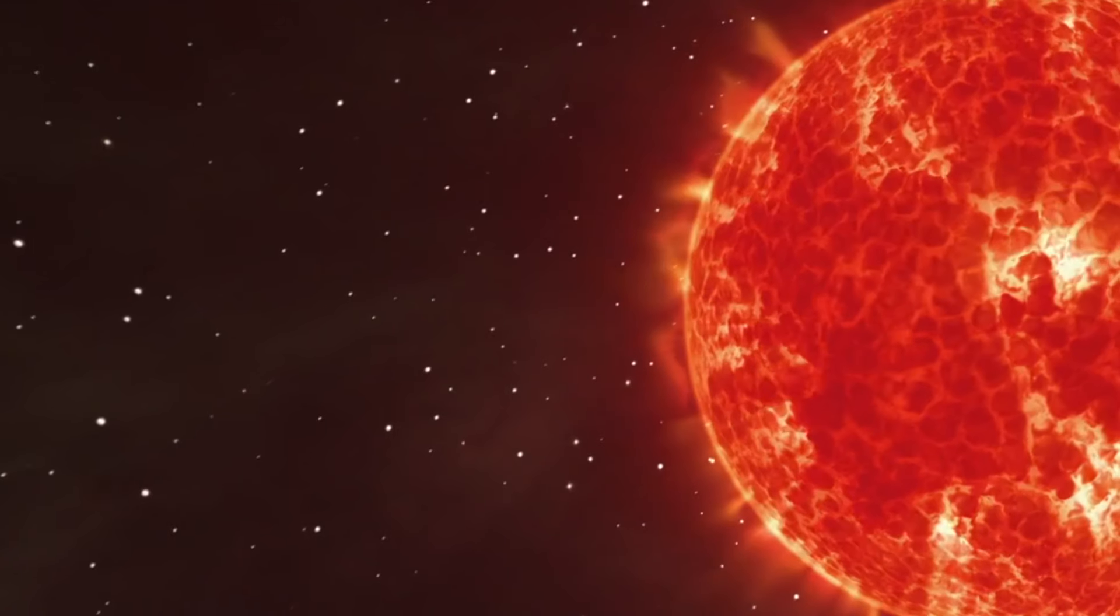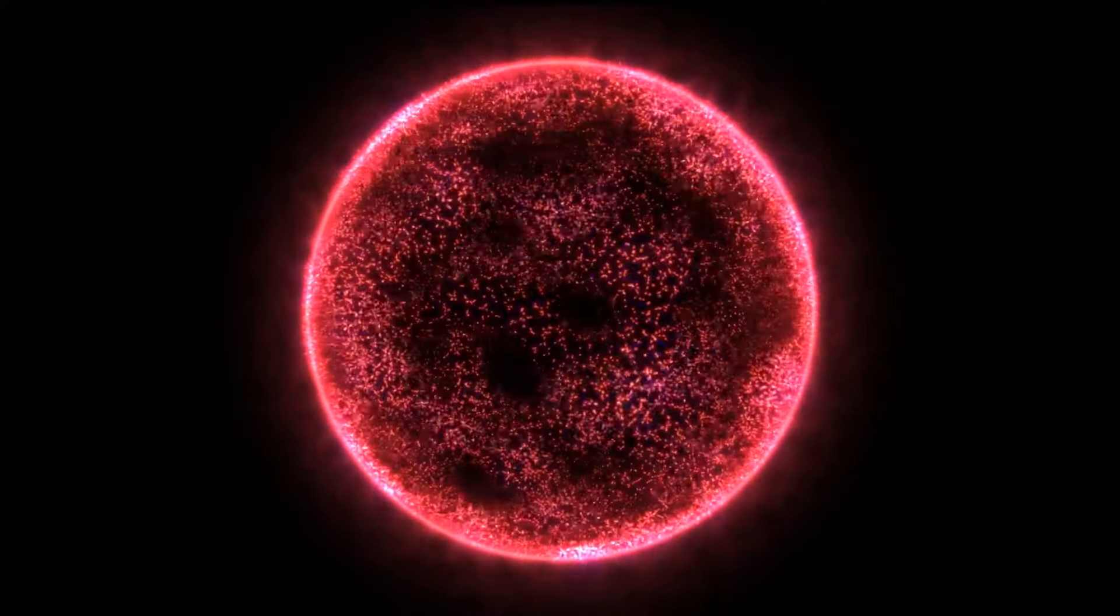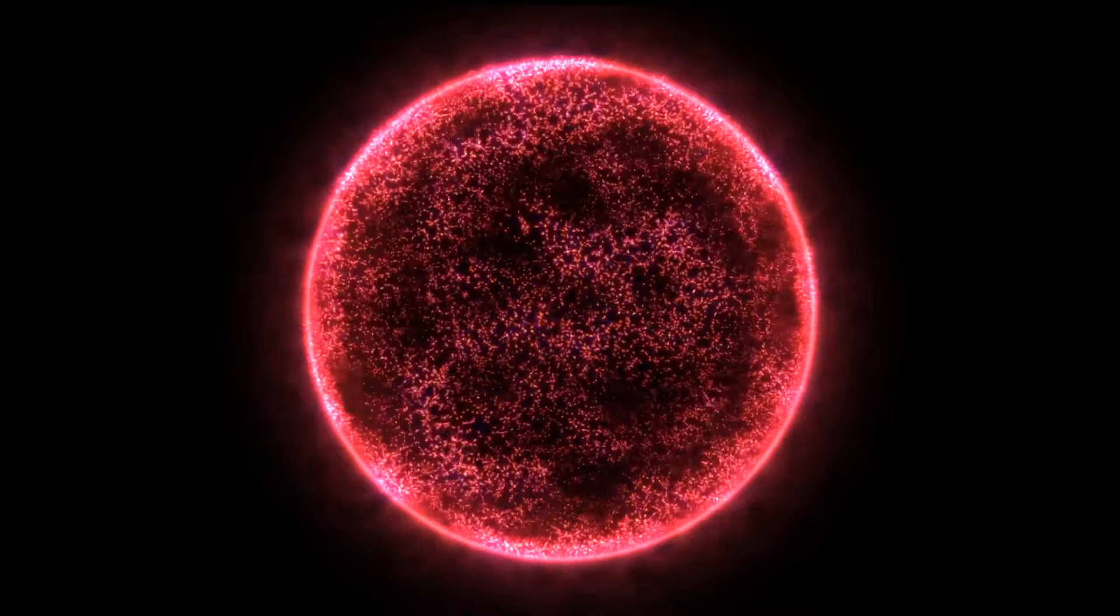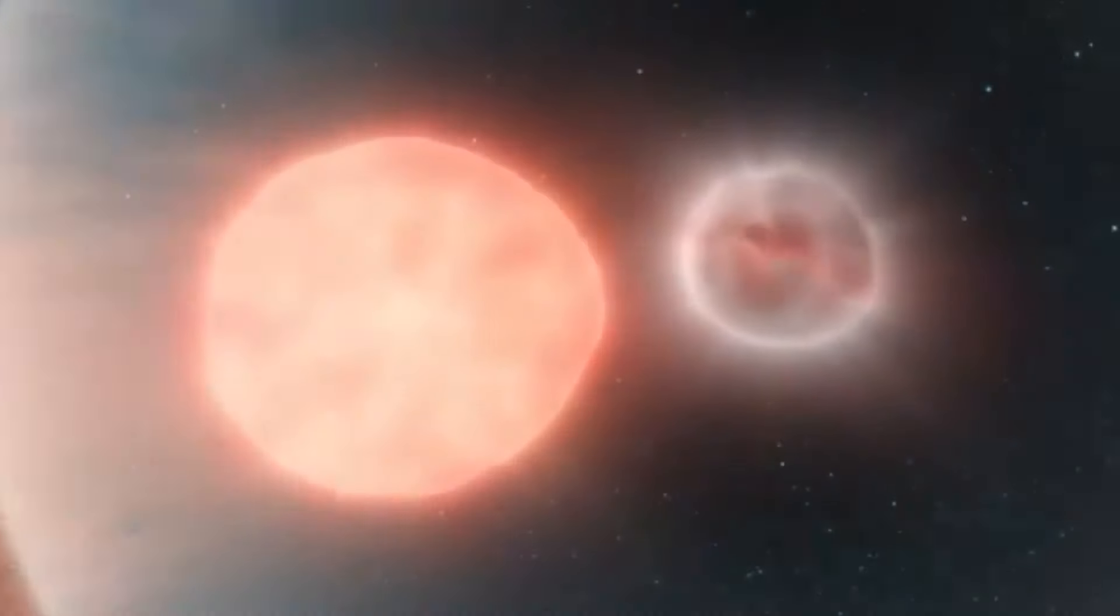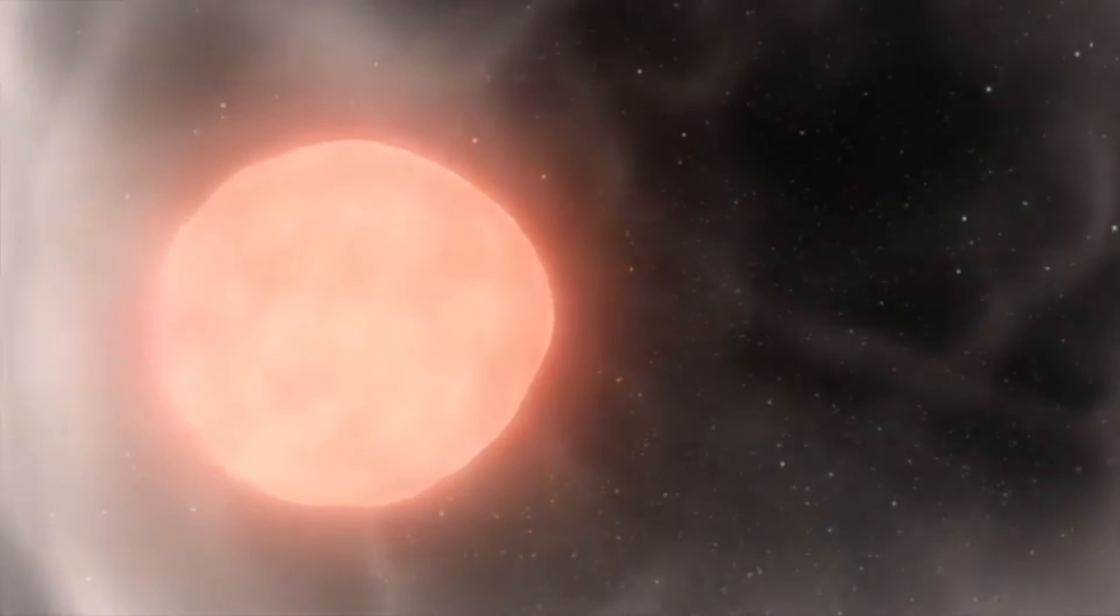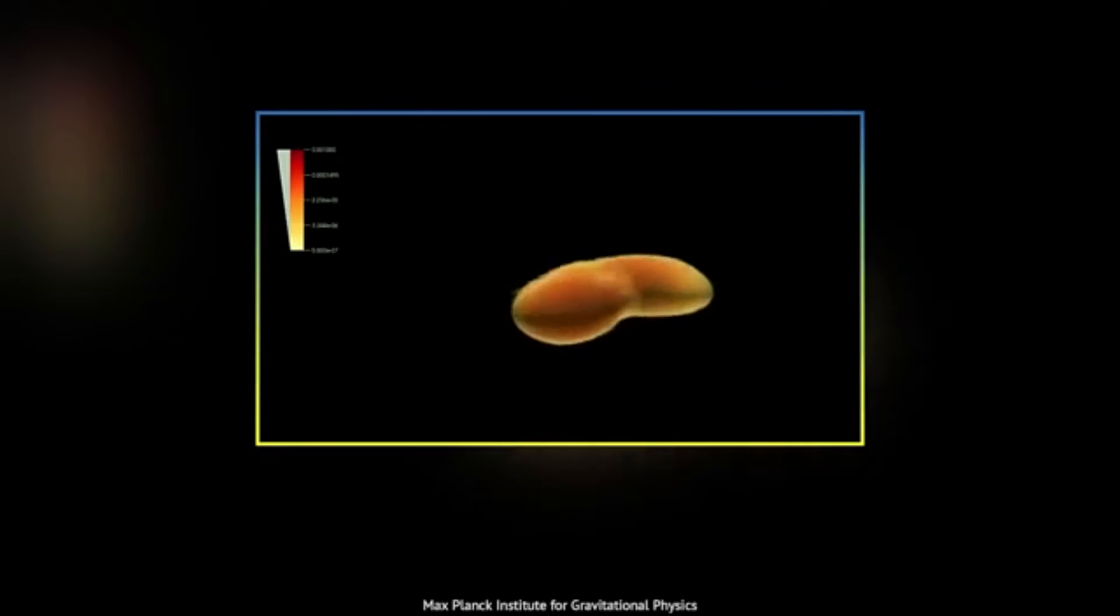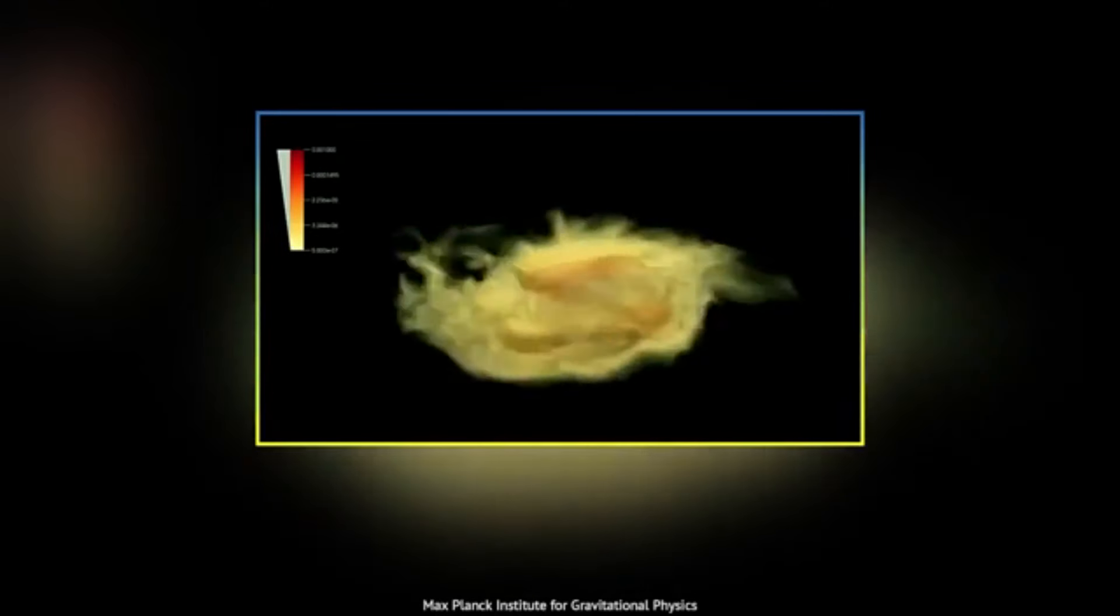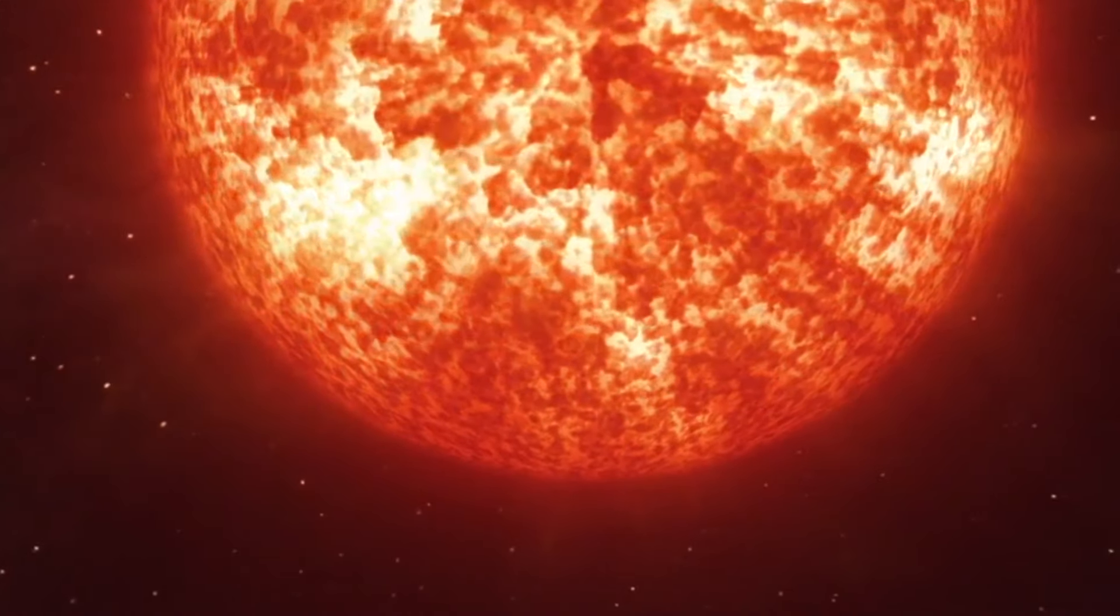As previously discussed, Betelgeuse is now in the late stages of its life cycle, a phase characterized by significant changes and phenomena. This red supergiant regularly loses substantial amounts of stellar material, a process driven by powerful convection currents from its interior. These currents transport material from the depths of the star to its surface, where it is expelled into space. This continual shedding of mass is not merely a passive occurrence, it plays a crucial role in the star's evolution and the dynamics of its surrounding environment.